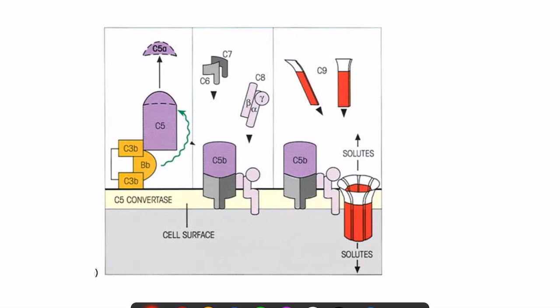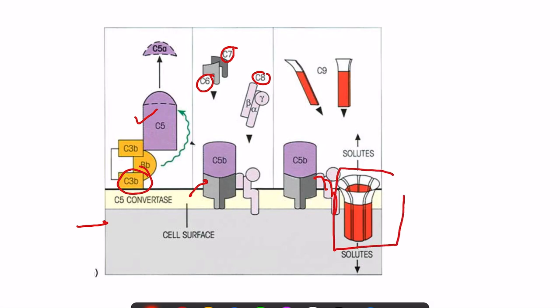Looking at a diagram: C3B is attached to the microbial cell surface and activates C5, which also binds to the microbial surface. Then C6, C7, and C8 join, creating a structure on the microbial surface. C9 then creates a pore in the microbial membrane. This whole complex is known as the membrane attack complex.